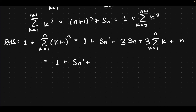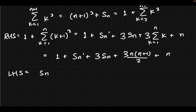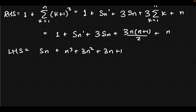Sn prime plus 3Sn plus — we know what this was; that's why the detour was necessary — 3 times n times n plus 1 over 2, plus n. And then the left-hand side, which is quite easy: we have Sn plus n cubed plus 3n squared plus 3n plus 1.